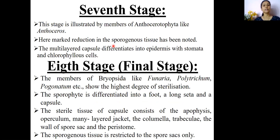In Anthoceros, a special structure called the columella is present in the sporophyte, along with foot, seta, and other sterile tissues. The eighth stage is represented by the higher members of Bryopsida class like Funaria and Polytrichum.